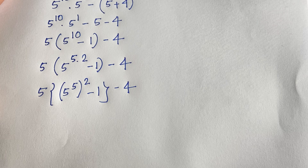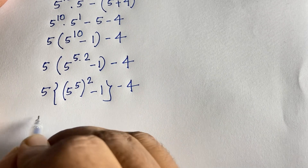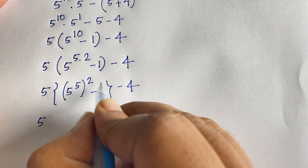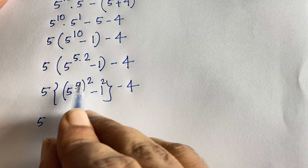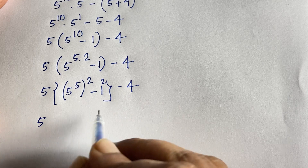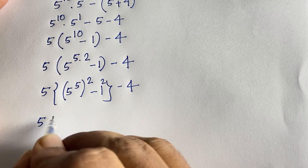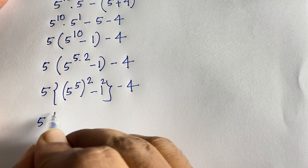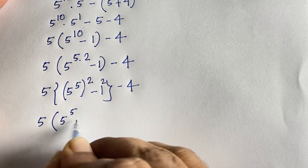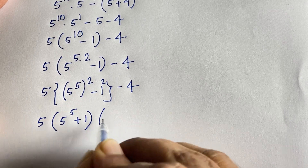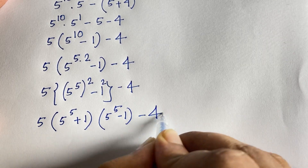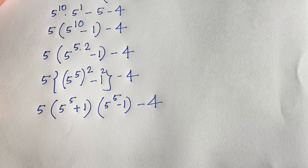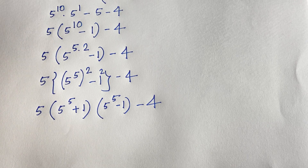Now here, if we think of (5^5)^2 as a square and 4 as 2 squared — so 1 squared is 1, no change — we can apply the identity: a squared minus b squared equals (a plus b)(a minus b). So it becomes 5 times (5^5 plus 1)(5^5 minus 1) minus 4, following this identity.